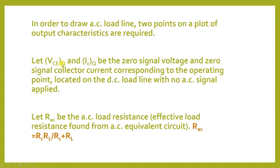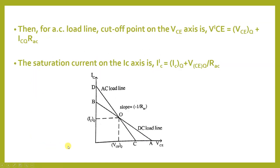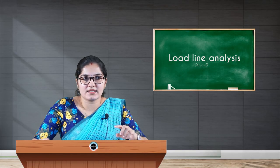The two required points are VCEQ on the X-axis and ICQ on the Y-axis — the zero-signal voltage and zero-signal current located on the DC load line with no AC signal applied. RAC is given by RC × REL / (RC + REL). The point on the X-axis is V'CE = VCEQ + ICQ × RAC, and the saturation current on the Y-axis is calculated accordingly. After taking these two points, the AC load line can be drawn. The DC load line is AB and the AC load line is DC; the point where they coincide is the Q point.